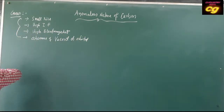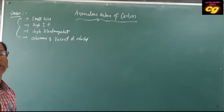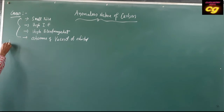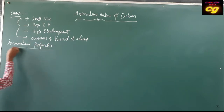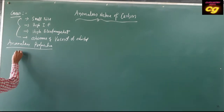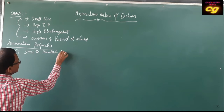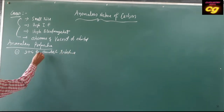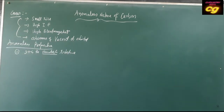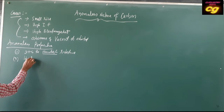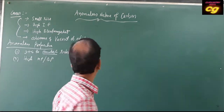All these four points are very important. Due to these, carbon shows a different nature compared to other elements. The anomalous properties of carbon include: first, it is the hardest compared to other elements — almost all other elements are soft but carbon is the hardest. Second, it has high melting point and high boiling point.